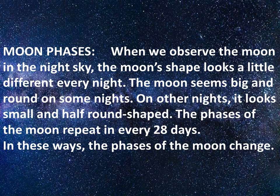When we observe the moon in the night sky, the moon's shape looks a little different every night. The moon seems big and round on some nights; on other nights it looks small and half round shaped. The phases of the moon repeat every 28 days. In these ways the phases of the moon change.